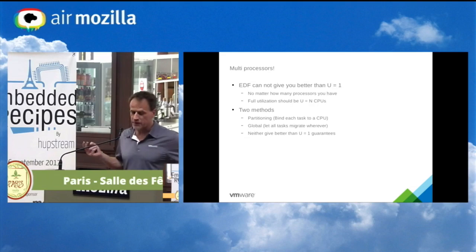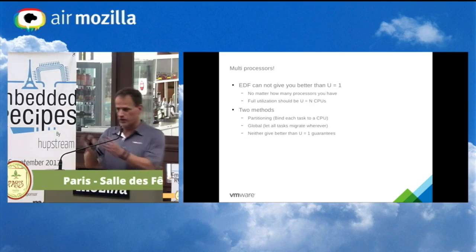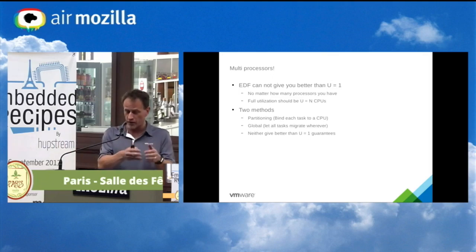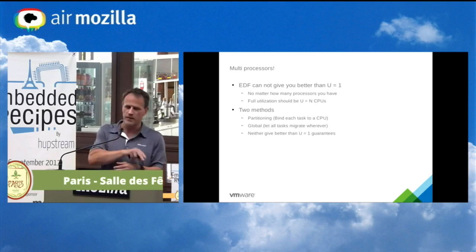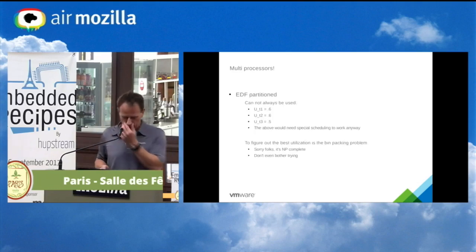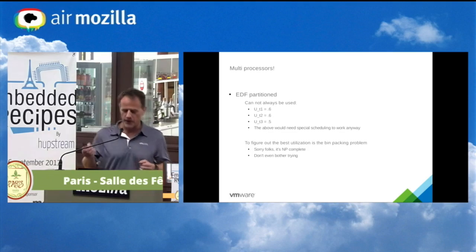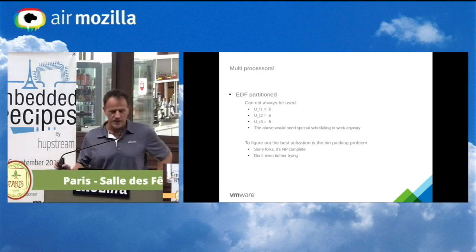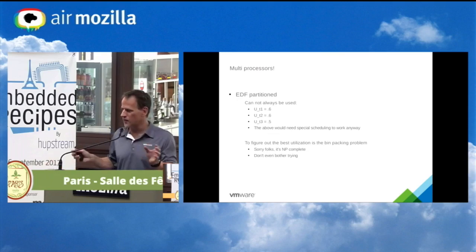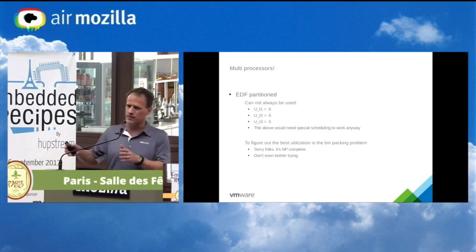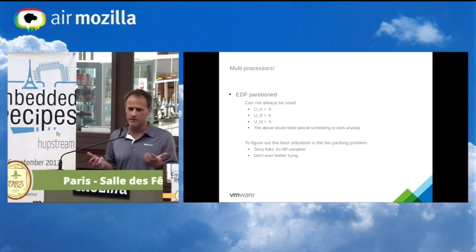There are ways around this. Partitioning basically binds each CPU and treats it like a single CPU, so you get utilization of one on each CPU — but nothing can migrate, so idle time on one CPU can't be used by tasks from another. If you try to partition with strange utilizations like 0.6, 0.6, and 0.5, it can be hard. When you have lots of CPUs and lots of tasks it becomes the bin packing problem, which is NP-complete — you're not going to be able to figure this out, and the kernel can't figure it out for you either.